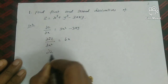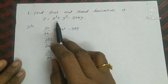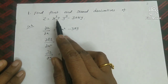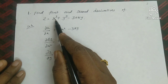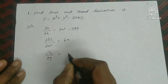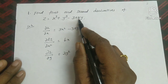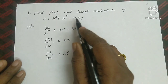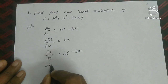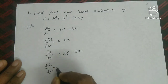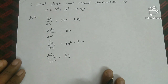Now computing ∂z/∂y with x treated as constant: differentiating x³ gives 0, differentiating y³ gives 3y², and differentiating -3axy gives -3ax. So ∂z/∂y = 3y² - 3ax. The second derivative ∂²z/∂y² is obtained by differentiating again with respect to y, giving 6y.